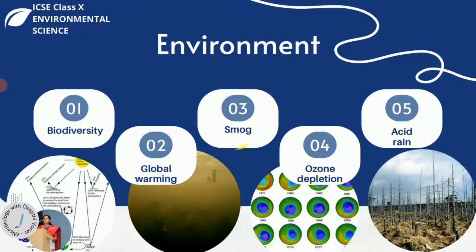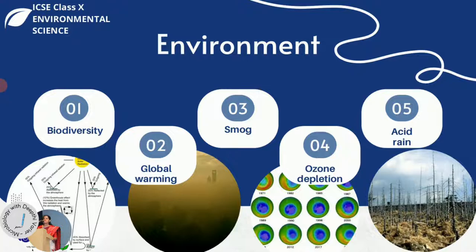There is also a smog problem, which happens in cities where there is a lot of smoke. Smog is a mixture of smoke and fog. This can lead to a lot of health problems and detrimental effects on people, the environment, buildings, animals, and plants. Smog is a big problem for the environment.